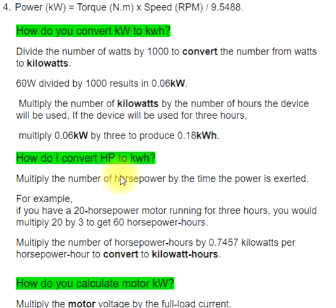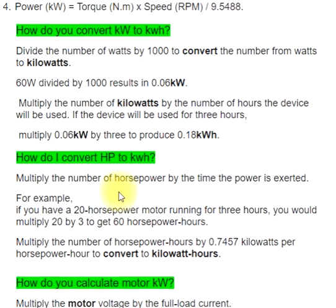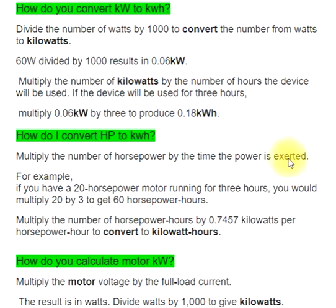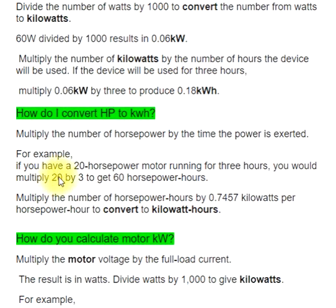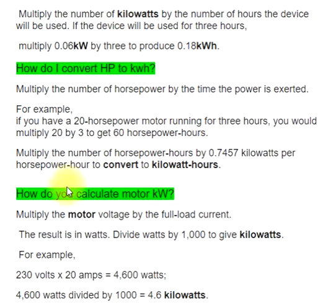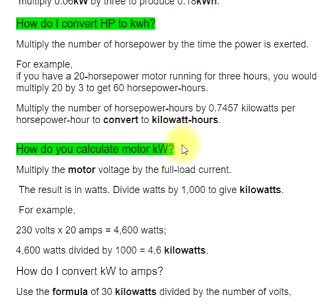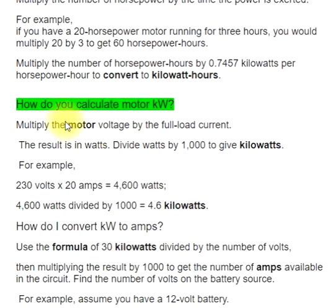How do I convert HP to kW? Multiply the number of horsepower by the time the power is exerted. For example, if you have a 20 horsepower motor running for 3 hours, you would multiply 20 by 3 to get 60 horsepower hours. Then multiply the number of horsepower hours by 0.7457 kilowatts per horsepower hour to convert to kilowatt hours.